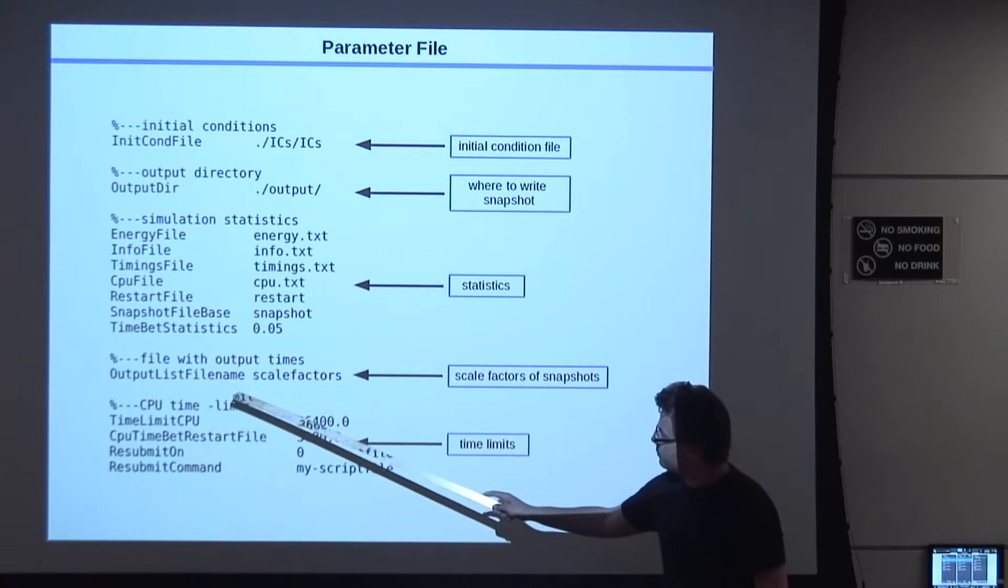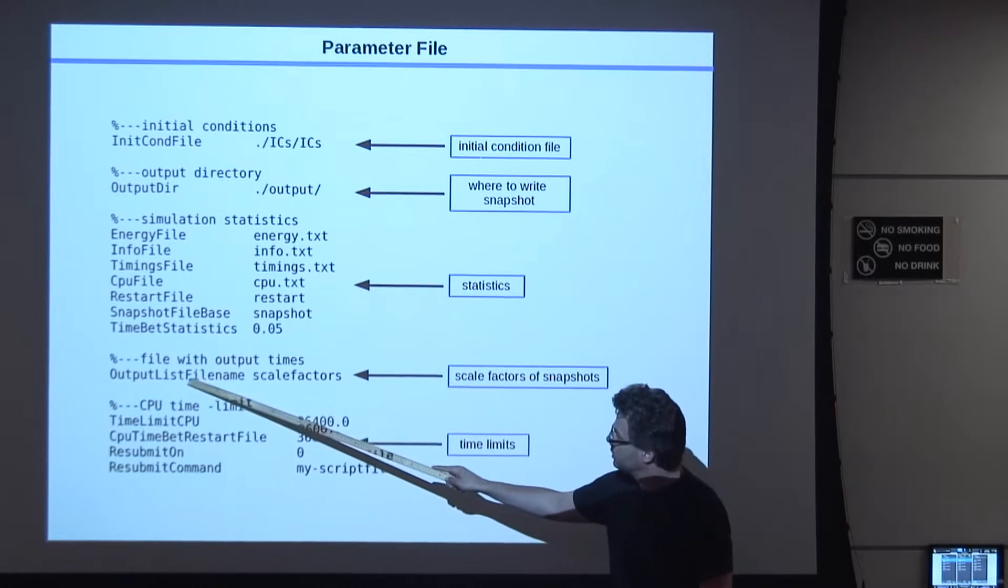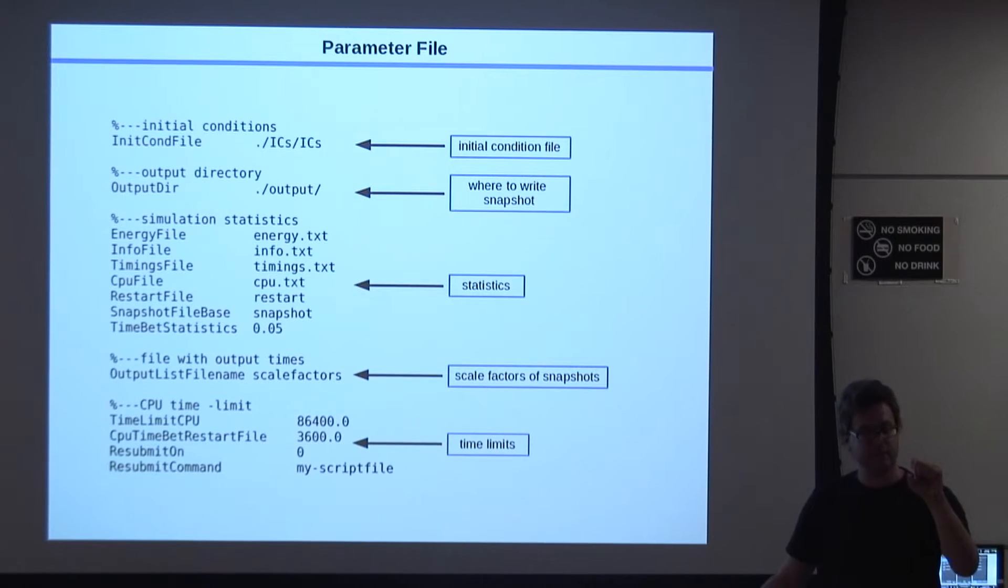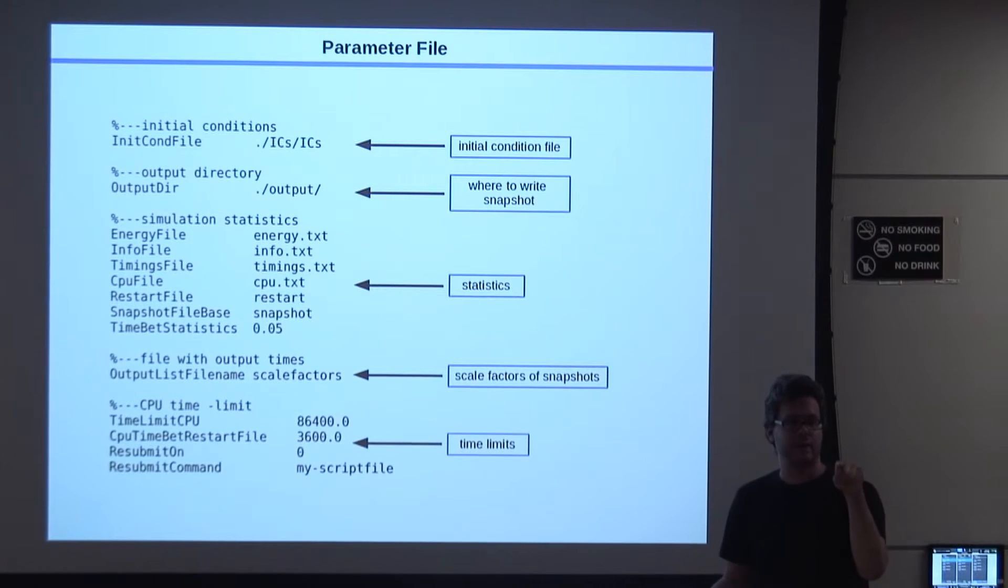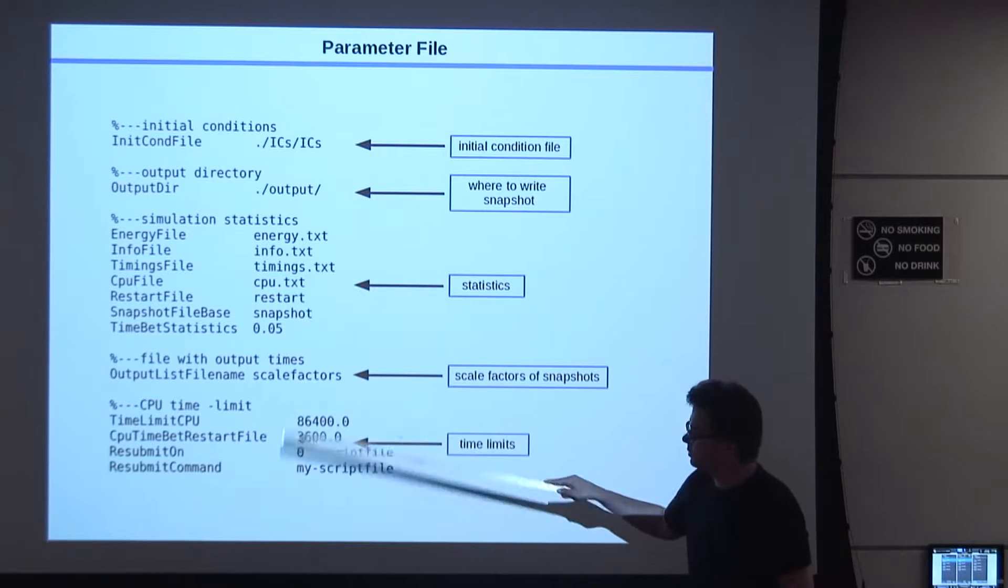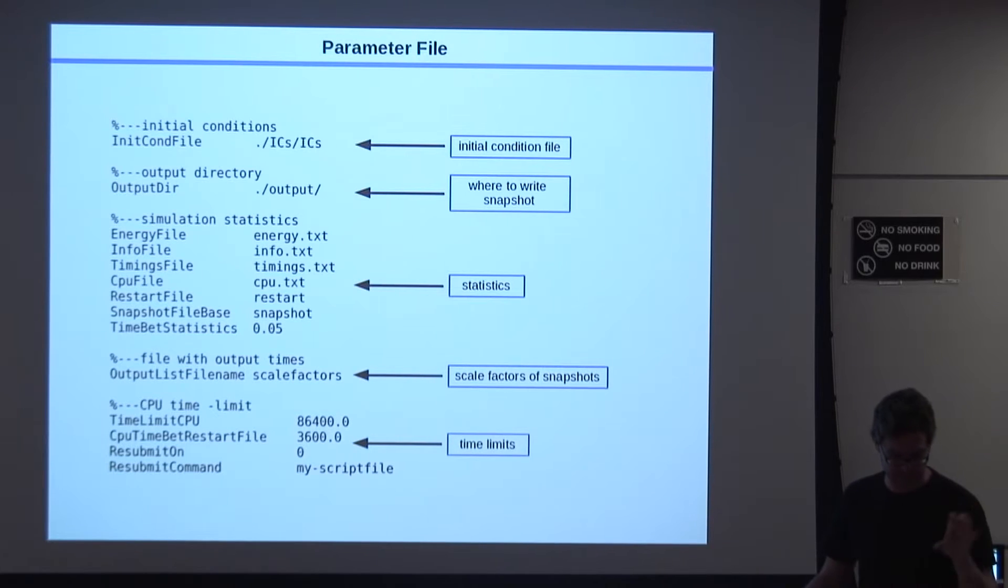Then you see here this output list file name, which is called scalefactors here. There's a text file in the directory where the code file is, which is called scalefactors. And in this file, there's just a bunch of numbers, and these numbers are actually scalefactors at which time the code should make an output. The scalefactor is normalized to scalefactor one for the present day, and this is also easily related to the redshift.